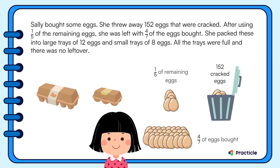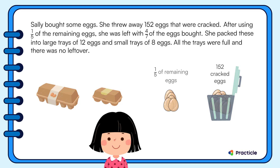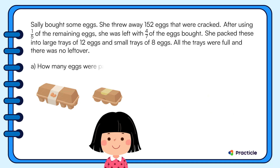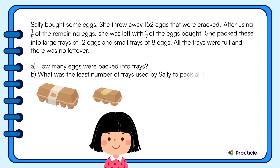There are two parts to this question. First, we need to find the number of eggs that were packed into trays. Then, we need to find the least number of trays used by Sally to pack all the eggs.